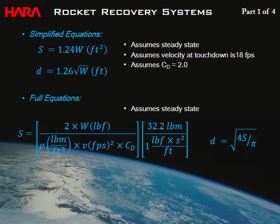The two simplified equations make three assumptions: steady state condition, touchdown velocity of 18 ft/s, and drag coefficient of 2. These are typical values to get you into the ballpark for shopping. The full equation, which only assumes steady state, is a bit longer but can be worked into an Excel spreadsheet where you can easily vary the target touchdown velocity.